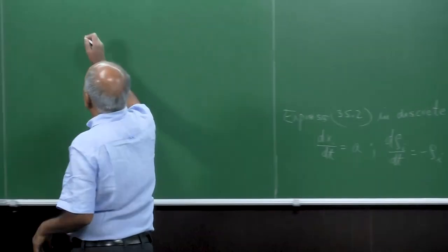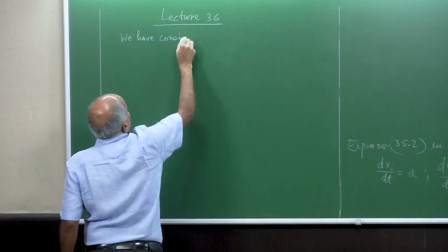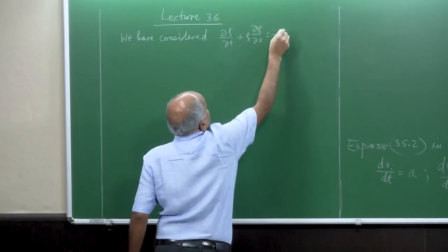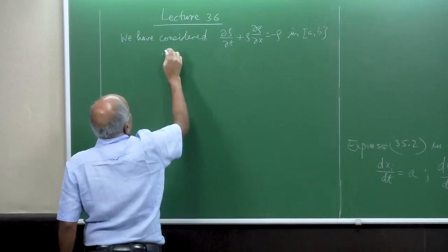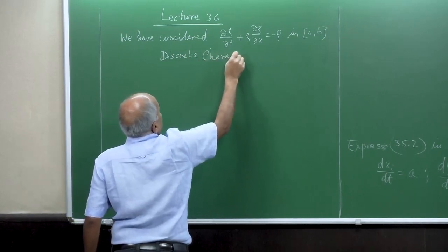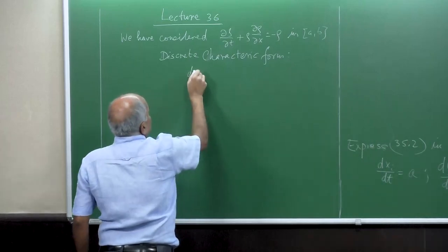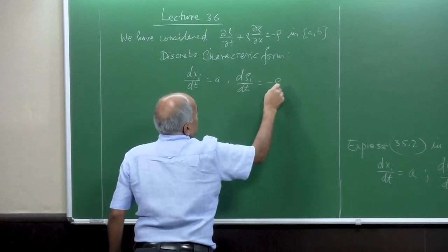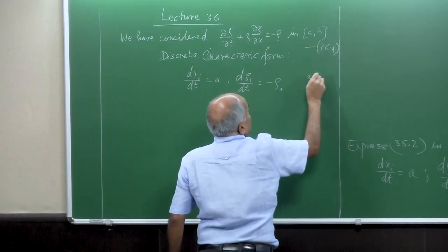So, what we had earlier: we considered del rho by del t plus rho del rho by del x is minus rho, in A and B. Then we had a discrete form of characteristics. The form was: dx_i by dt equal to A, and d rho_i by dt is equal to minus rho of i. Let us call this 36.1 and this 36.2.